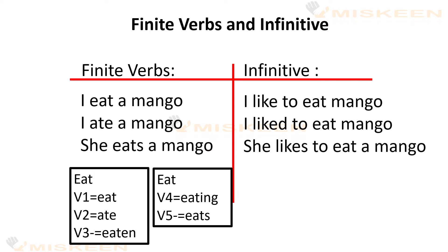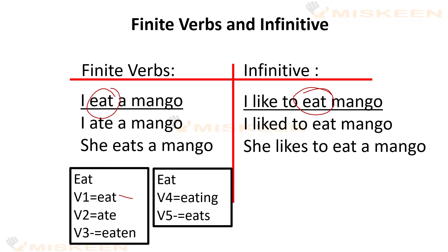Hum use karenge verb 'eat'. Iske alag-alag forms hain jo tenses ke mutabik aur subject ke mutabik change hote hain. Pehla sentence: I eat a mango — main ek mango khati hoon. I like to eat mango — mujhe mango khana pasand hai. In dono mein 'eat' apne base form mein hai — eat mein koi badlaav nahi hua hai.